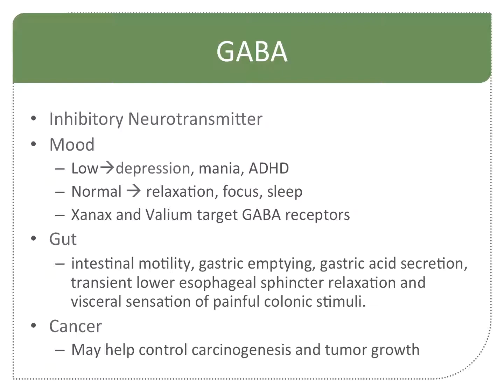GABA is an inhibitory neurotransmitter. With respect to the gut, it's moving stuff along — dopamine contracts, serotonin determines how often it contracts, and GABA is pushing, driving intestinal motility. GABA also numbs the visceral sensation so it doesn't hurt every time you defecate. If GABA is low: depression, mania, ADHD. If GABA is normal, that's your relaxation and focus — your normal state — and you should be able to sleep if your GABA is regular.